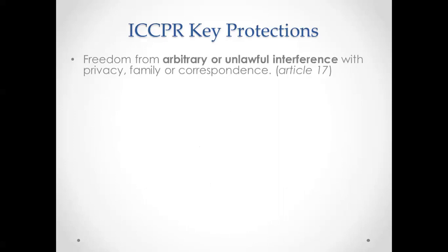There are specific articles related to freedom from arbitrary or unlawful interference with privacy, family, or correspondence. This is the article relating to surveillance — tracking, monitoring, illegally monitoring people. The main component is the right to privacy, which has been the center of much advocacy in the US since the Edward Snowden revelations. There is also a specific article regarding freedom of thought, conscience, and religion.